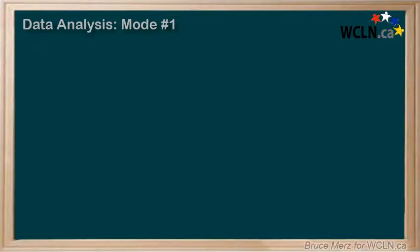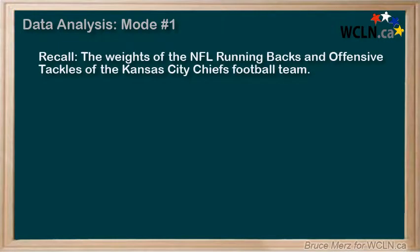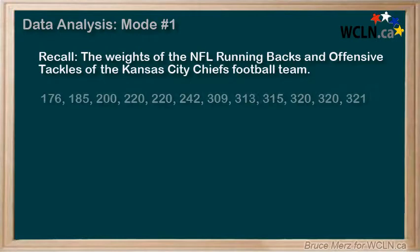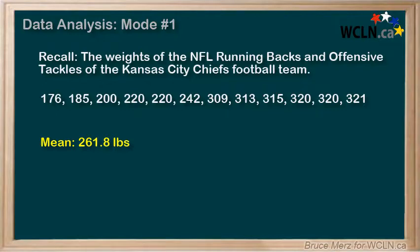So far, we've discussed a couple of different ways to describe the central tendency of something, or the average. But there's a third way that also sometimes makes sense. For example, if we look again at the weights of those NFL running backs and offensive tackles of the Kansas City Chiefs football team, when put in order, we found that the mean is 261.8 pounds and the median is 275.5 pounds. And as we pointed out earlier, neither of those really reflect a typical or average player here, as there isn't a single running back or offensive tackle anywhere between 245 and 305 pounds.